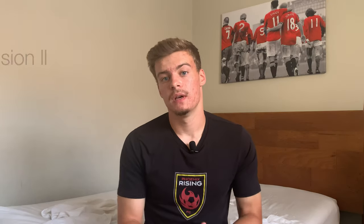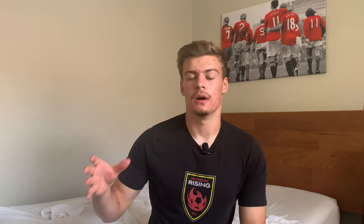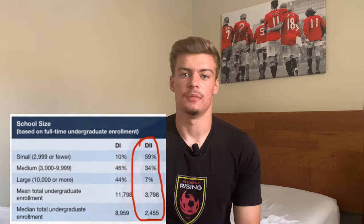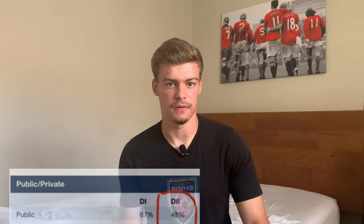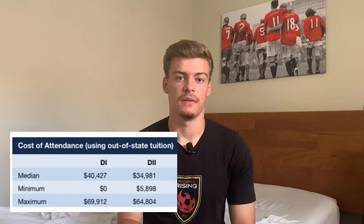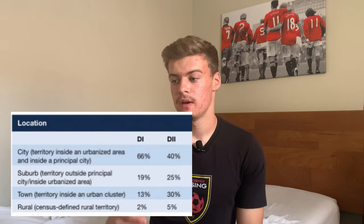Now D2: there are 312 Division II schools in America. Almost all of these schools are around 10,000 students or less, with the majority around 3,000 to 6,000 students. For D2, it is almost split down the middle between public and private schools — 48% are public and 52% are private. The median out-of-state tuition cost for D2 is $35,000 per year, which is the cheapest out of the three divisions. There's also a pretty decent mix of locations, whether urban, suburban, or smaller towns.